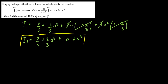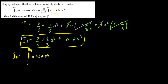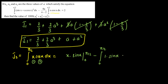Now let's evaluate I2, which is the integral from 0 to π/2 of x·cos x dx. We apply integration by parts: x is the first function, cos x is the second. So I2 = [x·sin x] from 0 to π/2 minus the integral from 0 to π/2 of sin x dx. Substituting limits: (π/2)·1 − 0 minus [−cos x] from 0 to π/2 = π/2 − 1. So I2 = π/2 − 1.